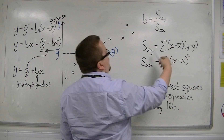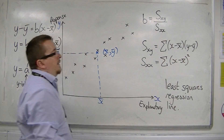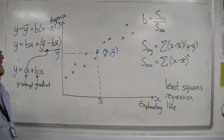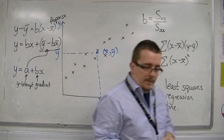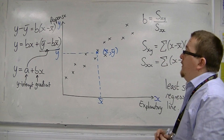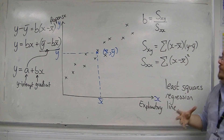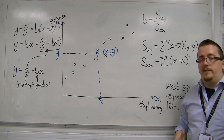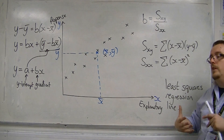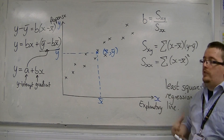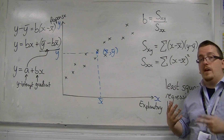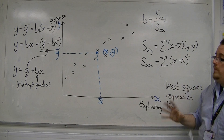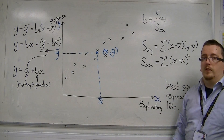These values are given to you in the formula booklet, and this gives you the value of b, the gradient of the line. It does look very, very complicated from this, but the actual calculations we go through are very straightforward. I will show you in the next few videos exactly how this is going to work.